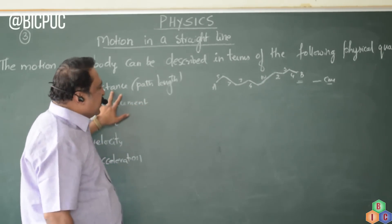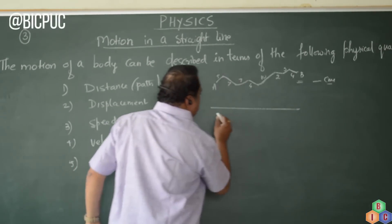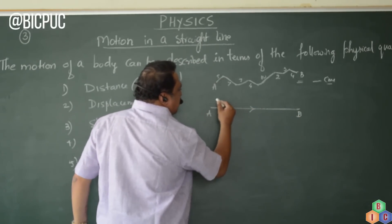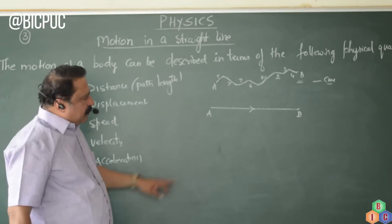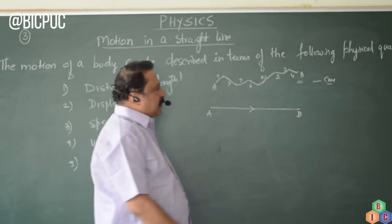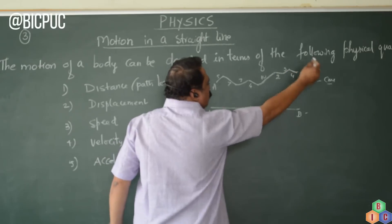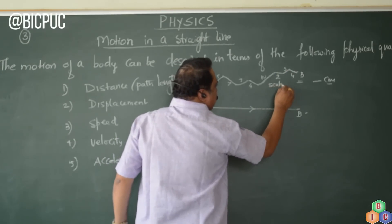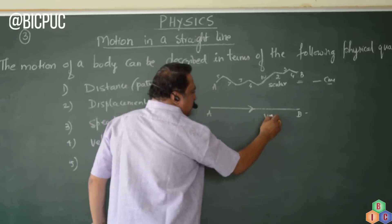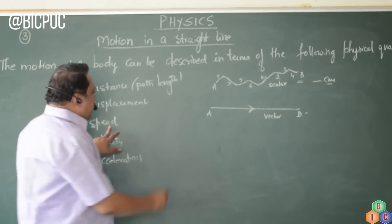Whenever a particle moves without any sense of direction, the total path length is called distance. Displacement is the distance covered by a particle with a sense of direction — the particle moves only in one direction from A to B. Speed has no sense of direction, so it is a scalar quantity. Displacement has a definite sense of direction, so displacement is a vector quantity.